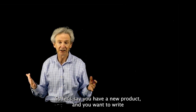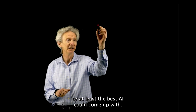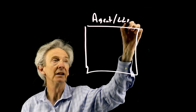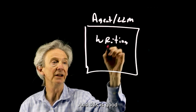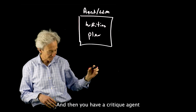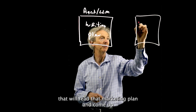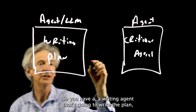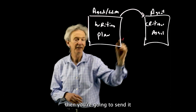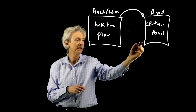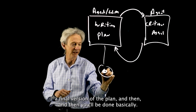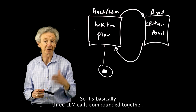So let's say you have a new product and you want to write a marketing plan for that product — a really good quality marketing plan, at least the best AI could come up with. Imagine you have one agent, a writing agent, that is good at writing marketing plans given some product description. Then you have a critique agent that will read that marketing plan and come up with a critique of it. You send it to the critiquing agent, then send it back to the writing agent to write a final version of the plan. So it's basically three LLM calls compounded together.